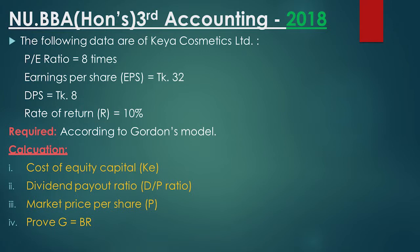Gordon's Model requires us to find: cost of equity capital KE, dividend payout ratio (DP ratio), and market price per share P0.